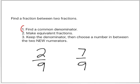Step one, find a common denominator. I'm looking at my denominators: nine and nine. That's the same, so I can skip that step. I already have fractions that work, so I can skip step number two.